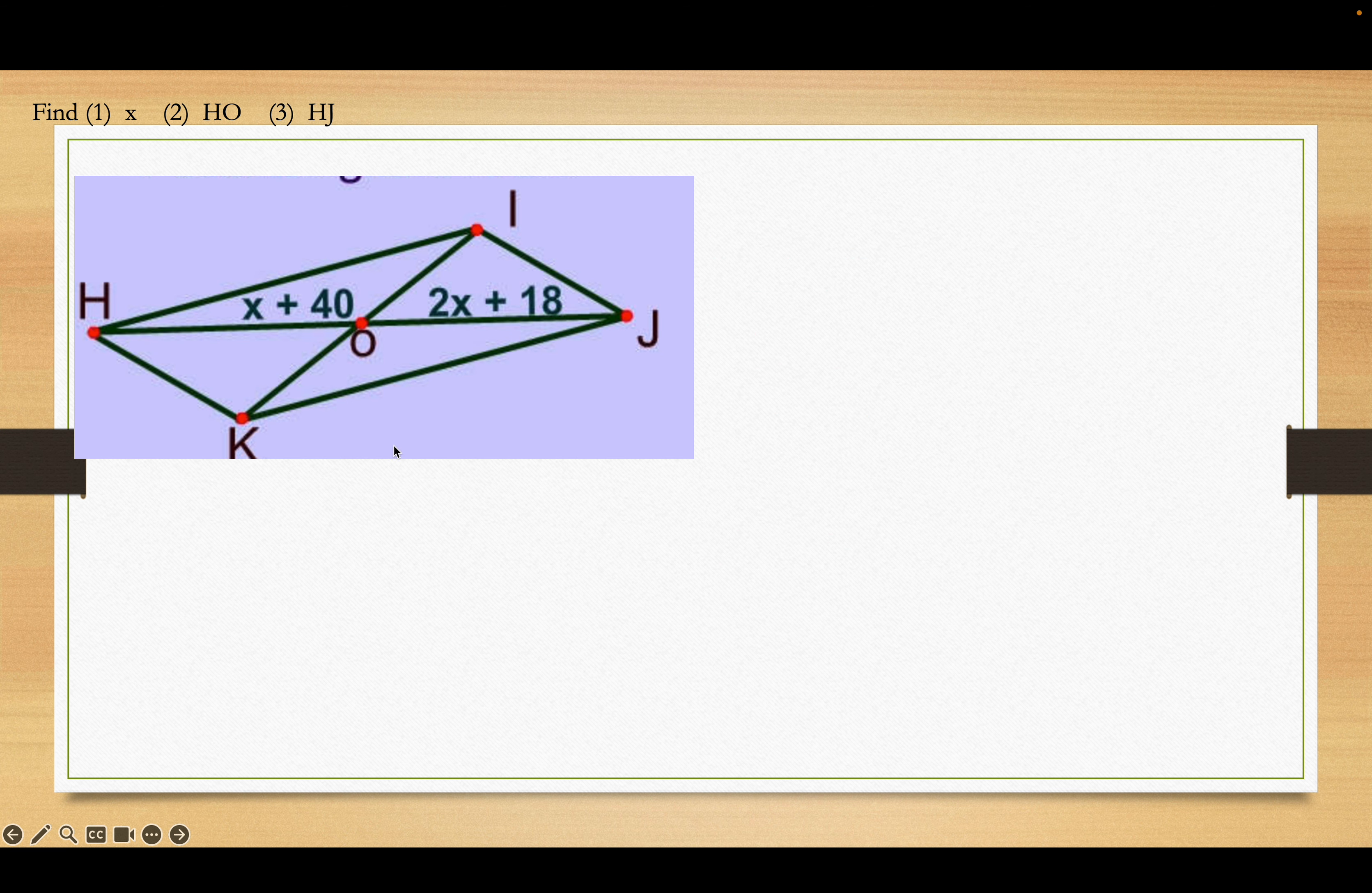Okay, for this one, remember the property that said the diagonals of a parallelogram bisect each other. And, up on the tan there at the top, it says find X, find the length of HO, and the length of HJ, which is the whole thing. Go ahead.